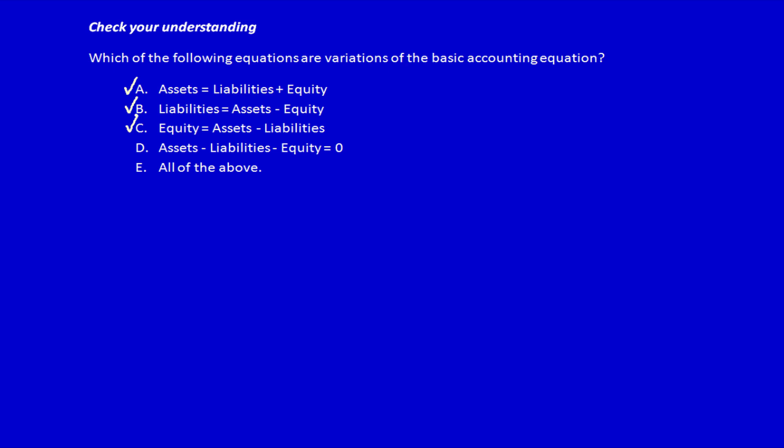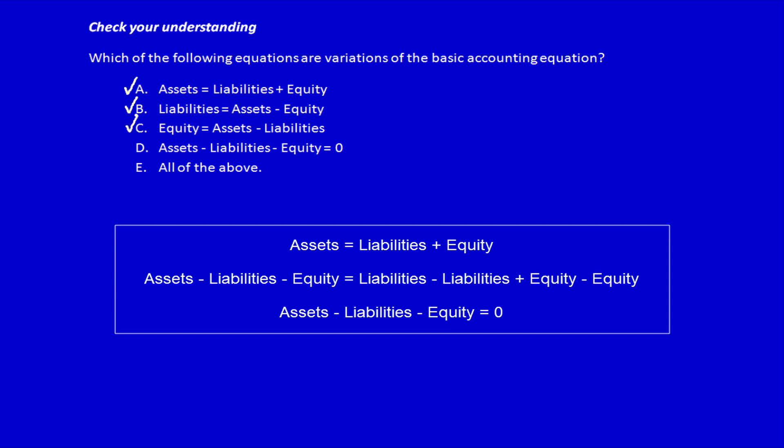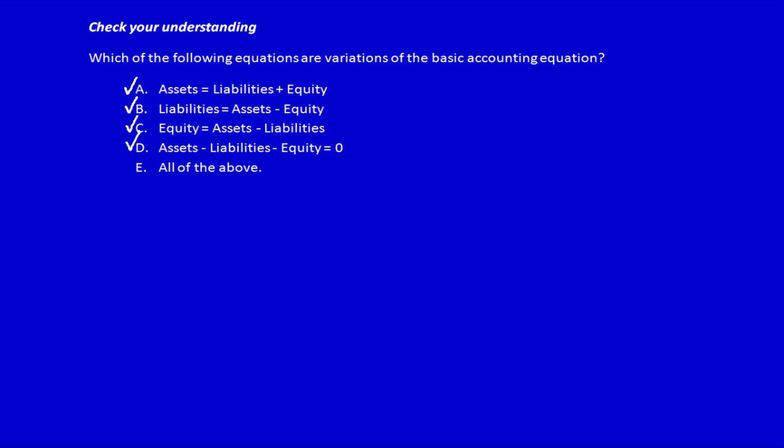And finally, assets minus liabilities minus equity is equal to zero. That's true because the assets are equal to liabilities plus equity. So if liabilities plus equity is equal to assets and I move liabilities and equity over to the other side of the equal sign, it's equal to zero. So the answer is E, all of the above. Note that we can use this mathematical equation to solve for unknown numbers.